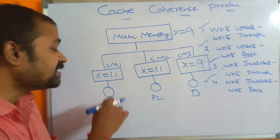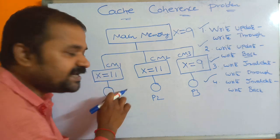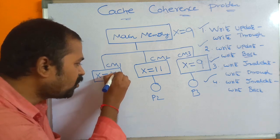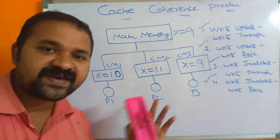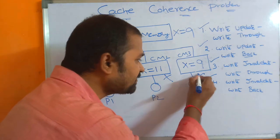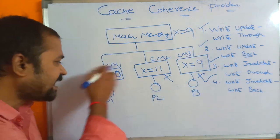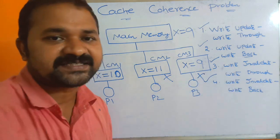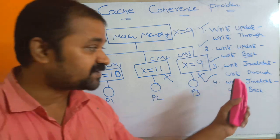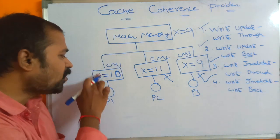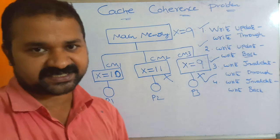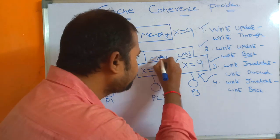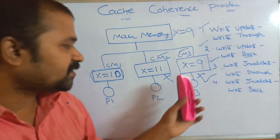Write invalidate means if we update a value in the cache, then we invalidate the other cache memories. For example, if X is 11 and we decrement by 1 to get 10, we must invalidate the other caches. Invalidating other caches signals that the cached value has changed, so that when those caches need to access that variable, they read the updated value from main memory.